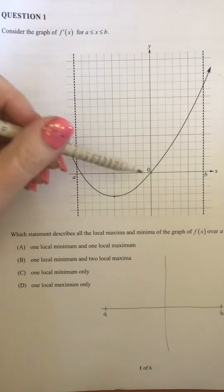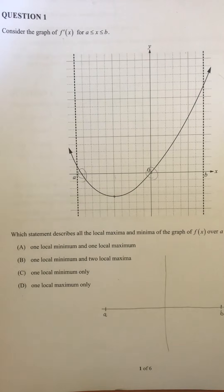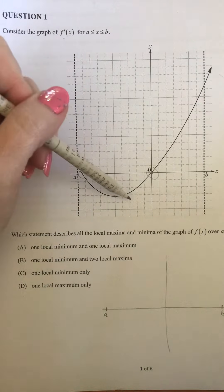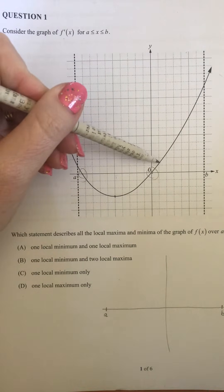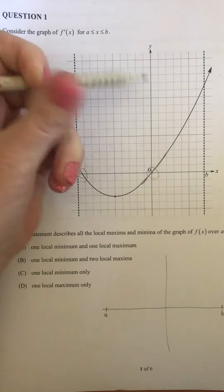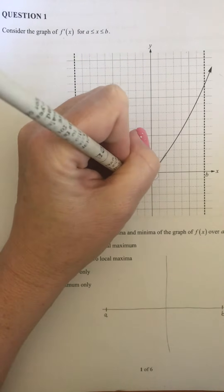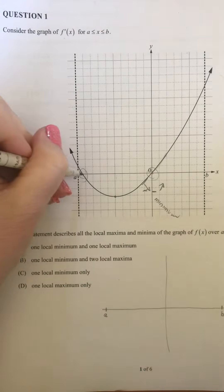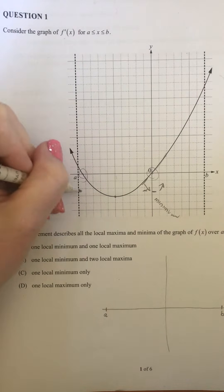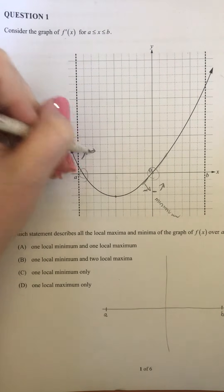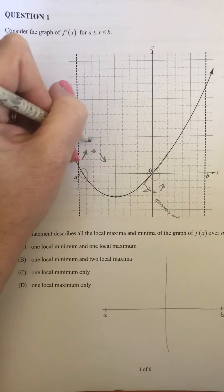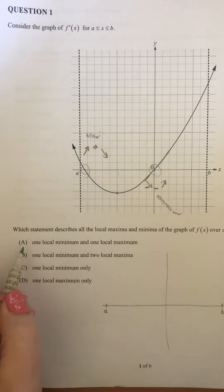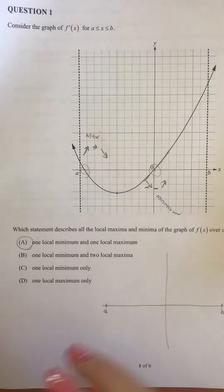From this we can see that we have two stationary points, one just after A and one at 0. Looking either side tells us about the gradient either side of that stationary point. We've got positive and negative. So if we've got a negative, coming down, across and up, that's a minimum. And then over here we've got positive and then negative. So we're coming up, across and down, which is a maximum. So when we see our graph, we know we're going to have one local minimum and one local maximum. So A is our answer for that one.